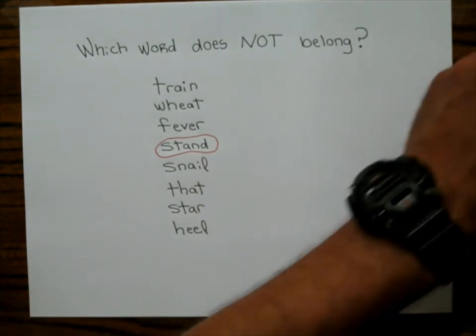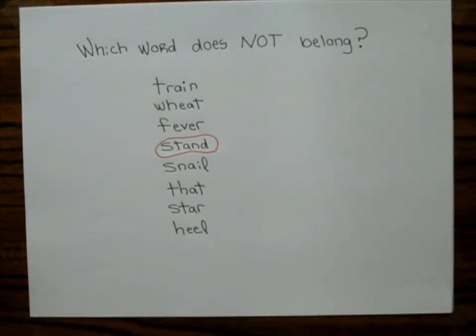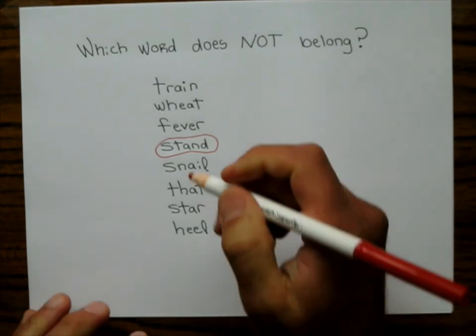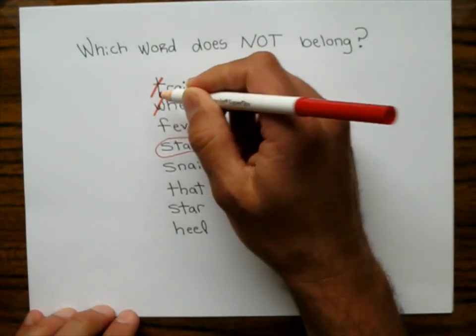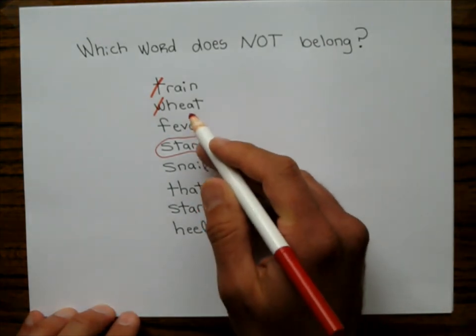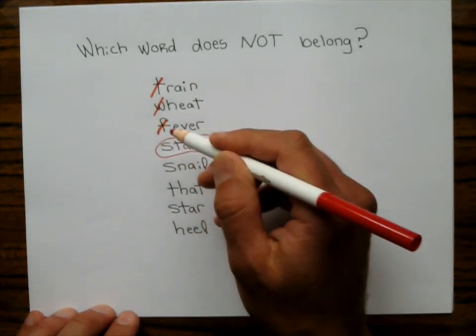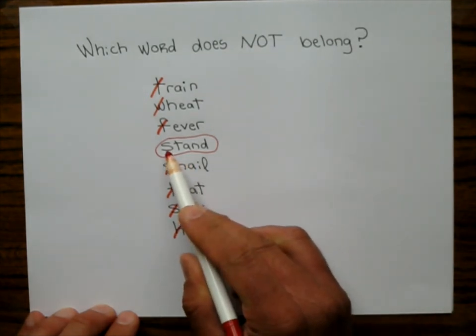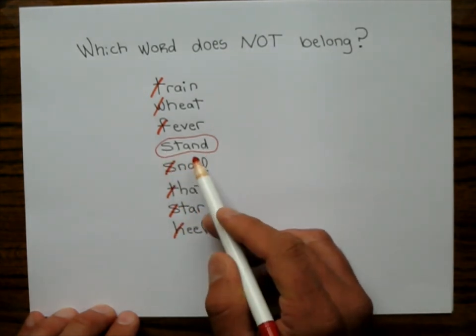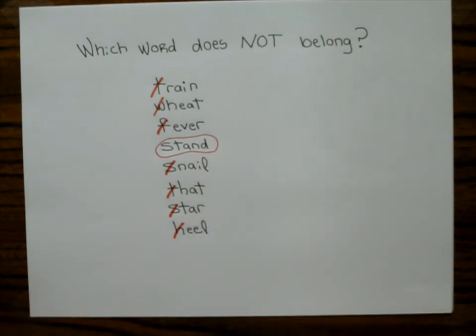Why? Because all the other words remain words if you take the first letter off. Train becomes rain, and then the next one, wheat becomes heat, ever, nail, hat becomes tar, eel. If you take an S off that, tanned, I don't think you can find that in the dictionary.